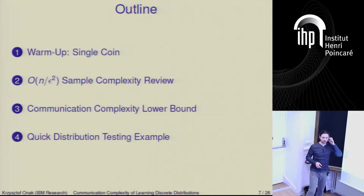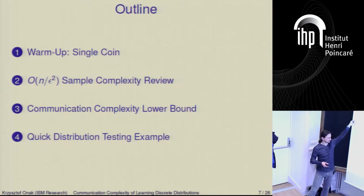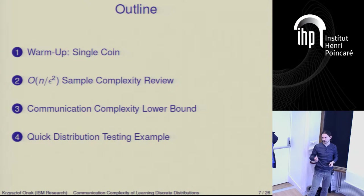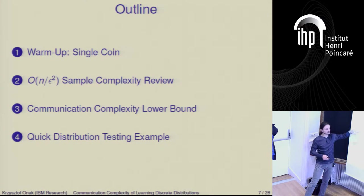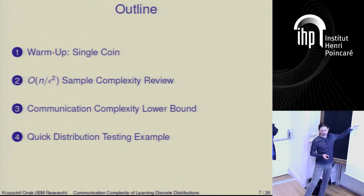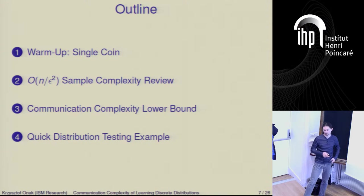Here is the outline of the talk. I'm going to start from a warm-up that reviews some techniques useful for this problem: I have a biased coin and I want to estimate this bias — how many coin tosses do I need? I'll show a simple proof that uses information complexity. Then I'll look at the hard instance for the problem of learning and show a lower bound for the number of samples needed. Then I'll use the same distribution for a lower bound in the communication complexity setting, and also talk about some generalizations.